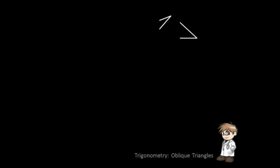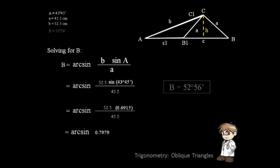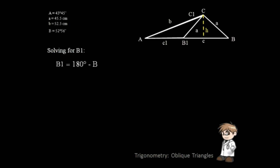First, let us solve angle B. To solve this, you will use this law of sine equation. So here's the solution. Now you have angle B. To solve for angle B1, simply subtract angle B from 180 degrees.